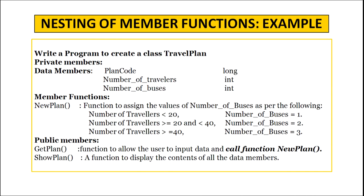Let us write a program to create a class travel plan. The private members are: data members plan_code of long type, number_of_travelers and number_of_buses of integer type, and private member function new_plan. The new_plan function assigns the value to number_of_buses as per the following criteria: if number_of_travelers is less than 20, number_of_buses is 1; if between 20 and 40, number_of_buses is 2; and if greater than or equal to 40, number_of_buses is 3. There are two public member functions: get_plan, which allows the user to input data and calls new_plan, and show_plan, which displays all data members.